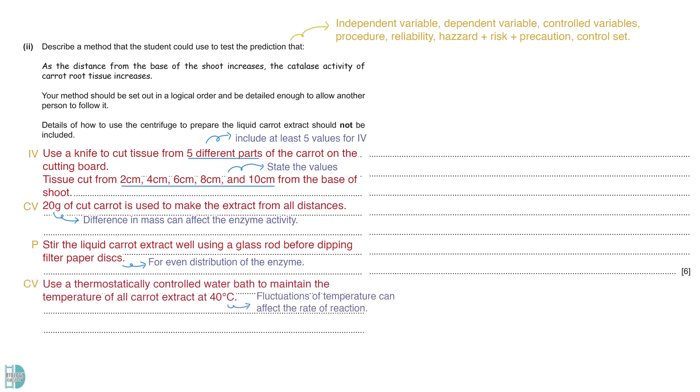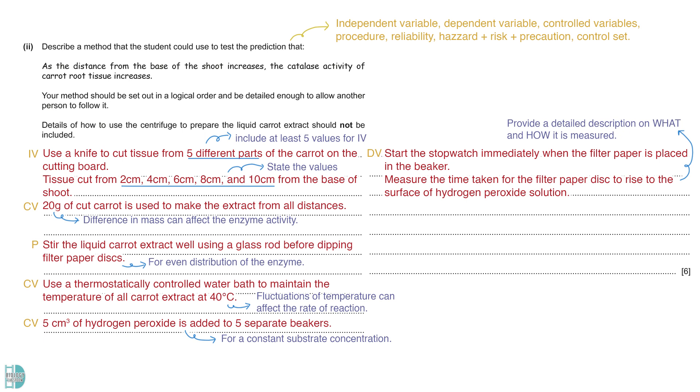This must be standardized as we do not want the difference in mass to affect the activity. Use a glass rod to stir the liquid carrot extract well before dipping the filter paper discs. The enzyme may not be evenly distributed on the discs if we do not stir it first. Then, a thermostatically controlled water bath was used to maintain the temperature of all carrot extract at 40 degrees Celsius. This is to prevent the rate of reaction changes due to the fluctuations of the temperature. 5 cm³ of hydrogen peroxide is added to five separate beakers. We must use the same volume as this affects the substrate concentration. Start the stopwatch immediately when the filter paper is placed in the beaker. A detailed description of how the dependent variable is measured should be included. In this case, we are using the stopwatch to measure the time taken for the filter paper disc to rise to the surface of the hydrogen peroxide solution. To increase reliability, we will make three replicates for each distance and calculate the mean value for each one of them.